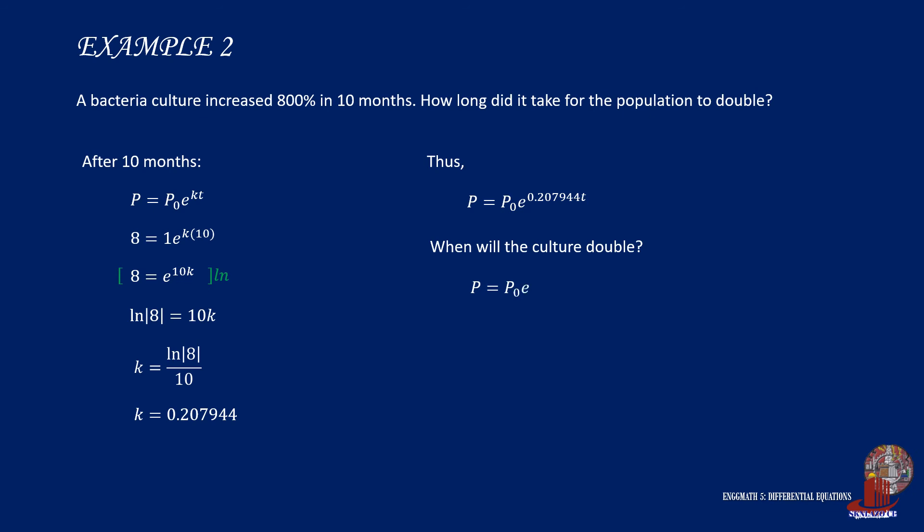Now to answer the question, when will the culture double? Use the modified working equation and plug 2 for p and still p0 will be 1 to keep the ratio. Then simplify the equation by multiplying ln where we got ln of 2 is equal to 0.207944 times t. Then divide ln of 2 with the value of k yielding t as 3.33 months or 3 months and 10 days.